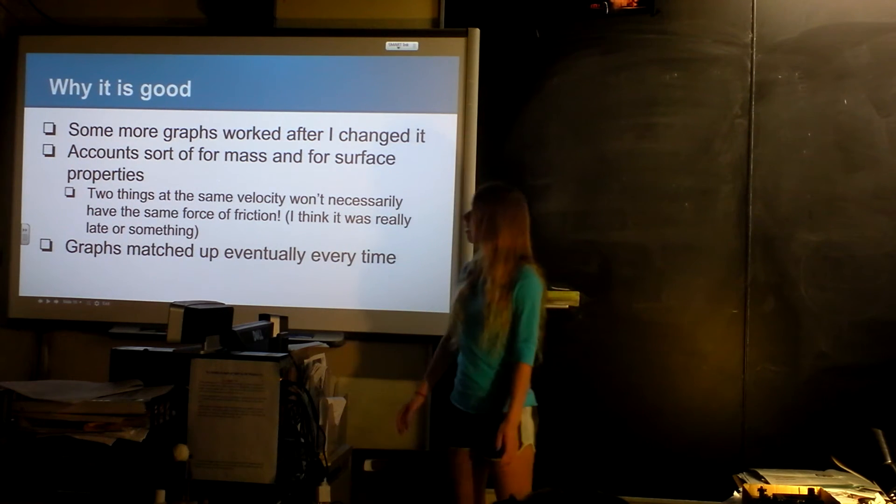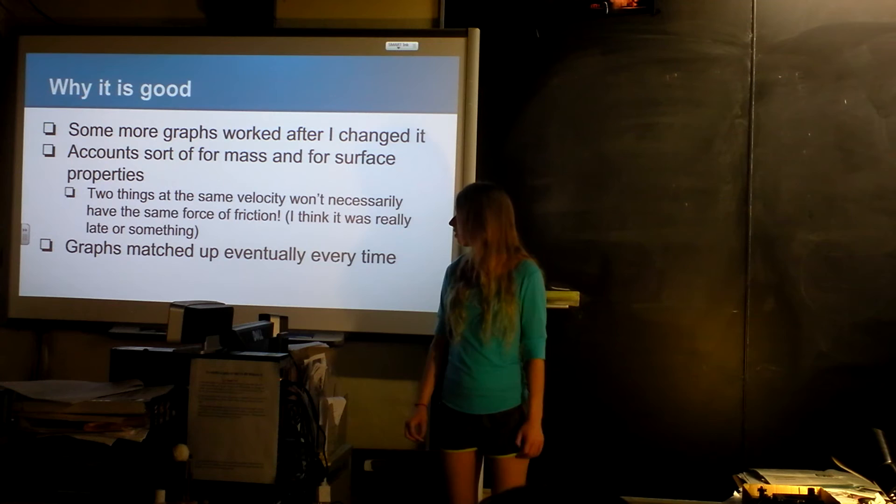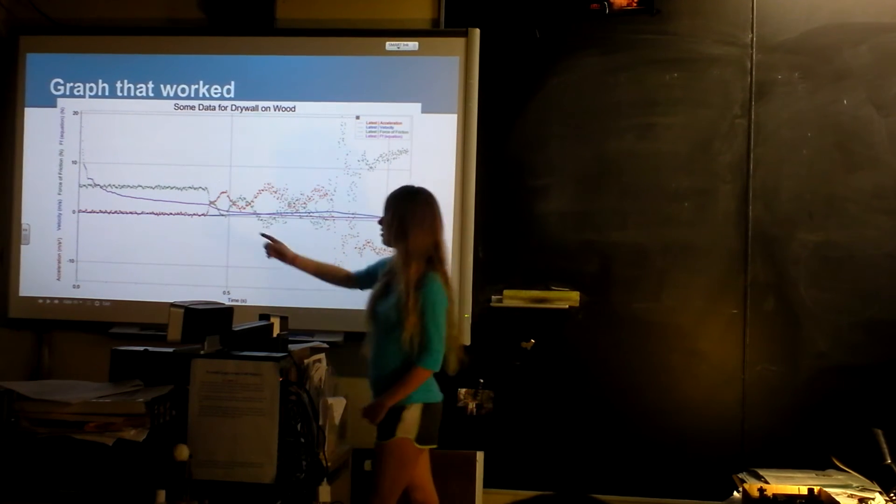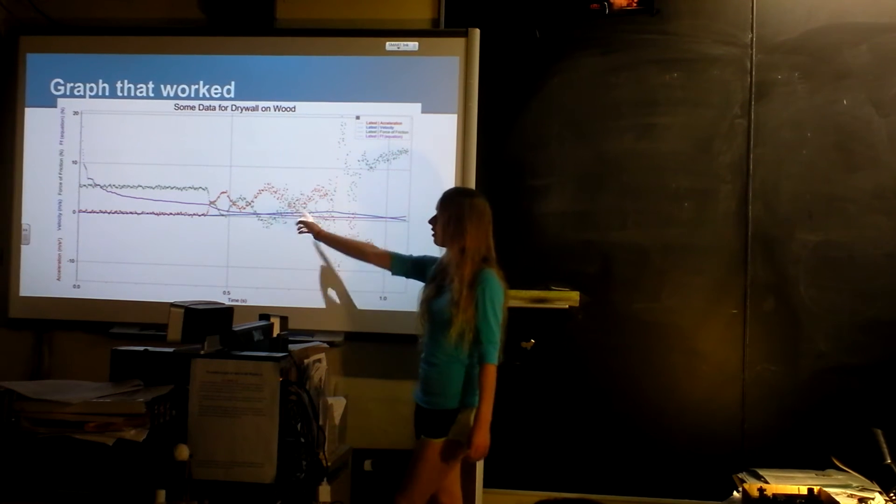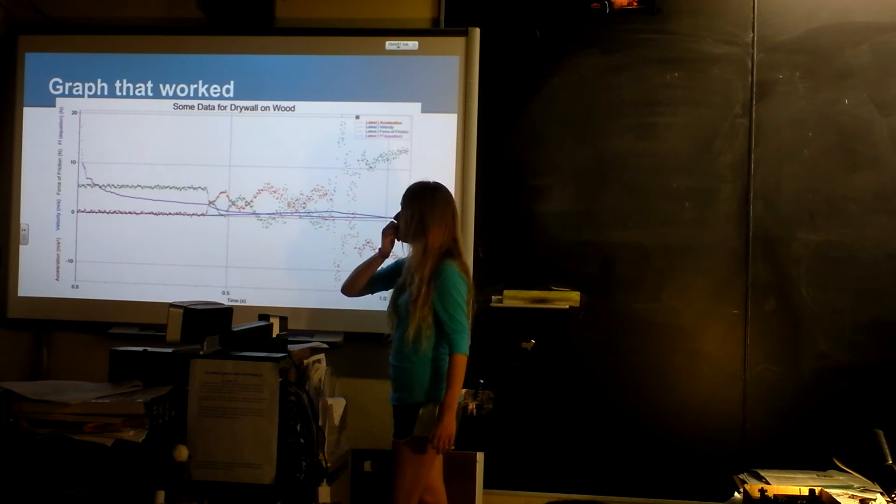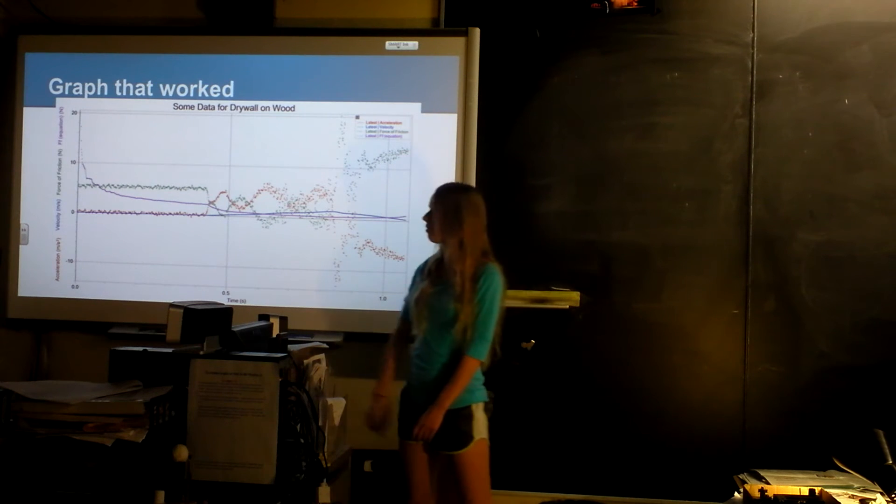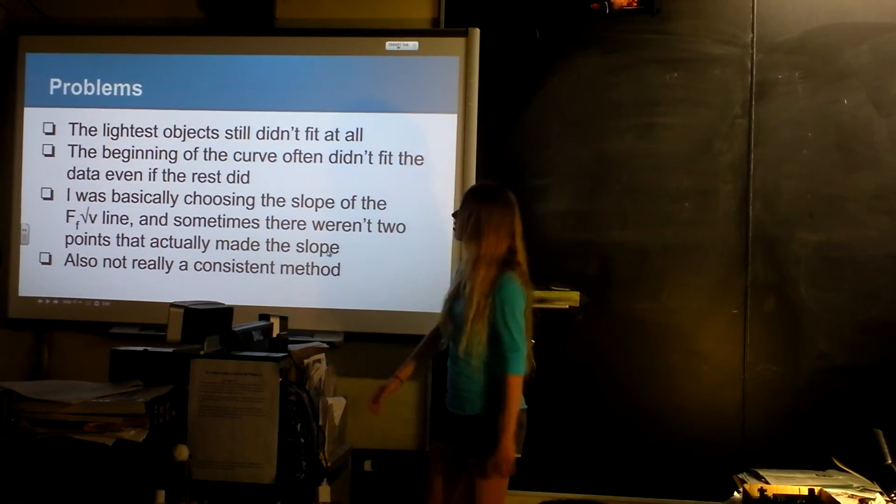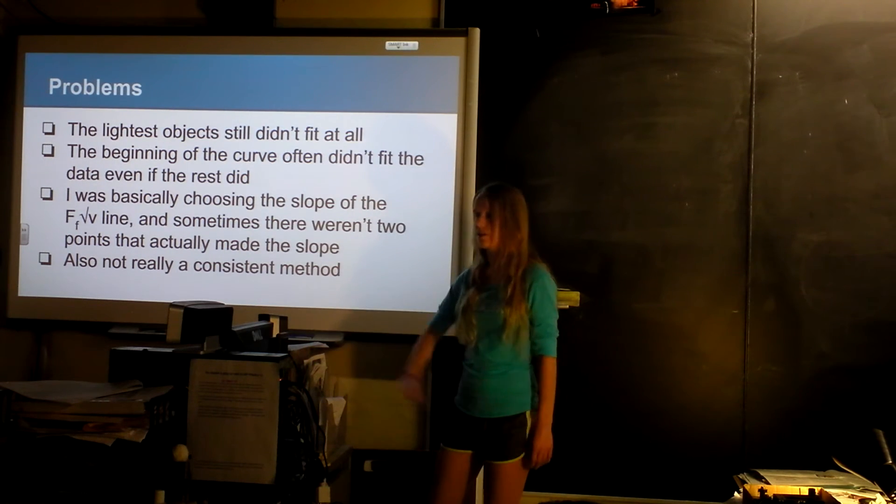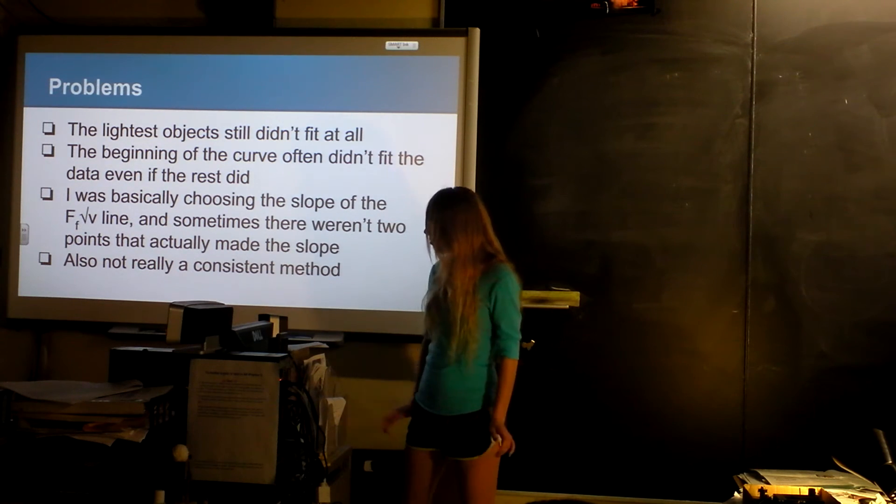After I changed to a variable, a lot of the graphs worked a lot better. This graph worked really well. The purple is what the force of friction should be according to my equation, and the green is my measured data. But on some of the graphs, it wasn't matching up until the end, but they all matched up at the end. I'm really not sure what happens at the beginning with some of them. I think it might just have something to do with when it's changing from static to kinetic. The really light objects still didn't fit at all because they had such little friction that it was just down at zero.